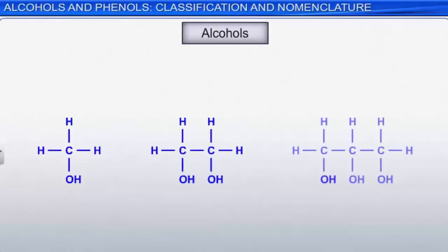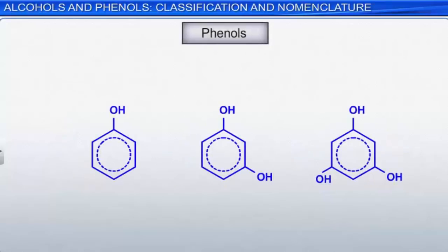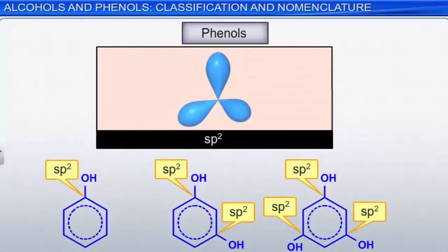Alcohols are organic molecules that contain one or more hydroxyl groups attached to a carbon atom or atoms, as shown in the illustration. By contrast, phenols contain one or more hydroxyl groups attached to a carbon in an aromatic ring. In phenols, the carbon attached to the hydroxyl group is sp2 hybridized.